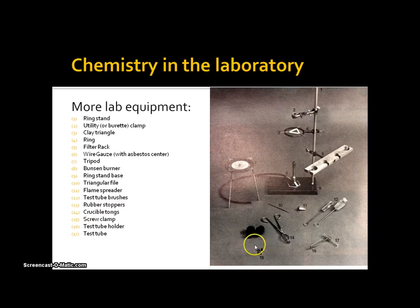Here's a screw clamp used for clamping rubber hoses and basically restricting the flow of water or flow of whatever liquid that you happen to have. This is a test tube holder over here and it's holding a test tube. That's chemistry in the laboratory. I'll be back with more.